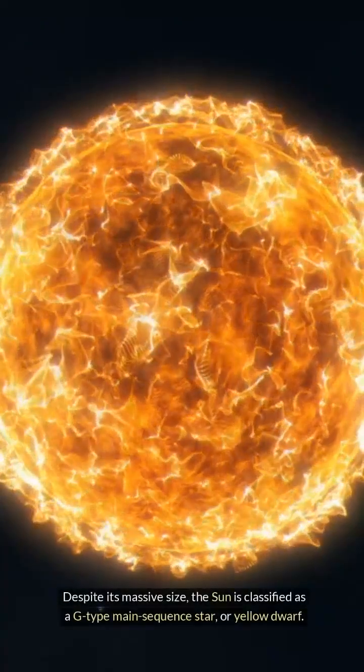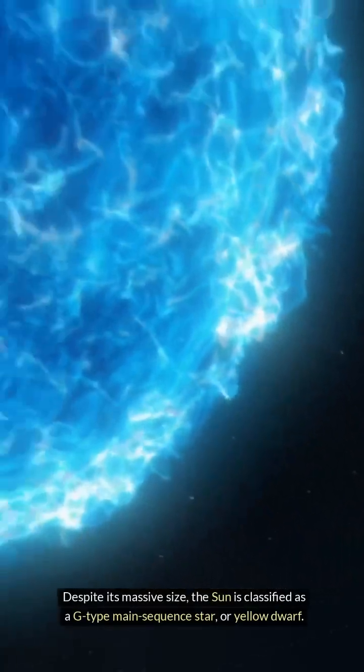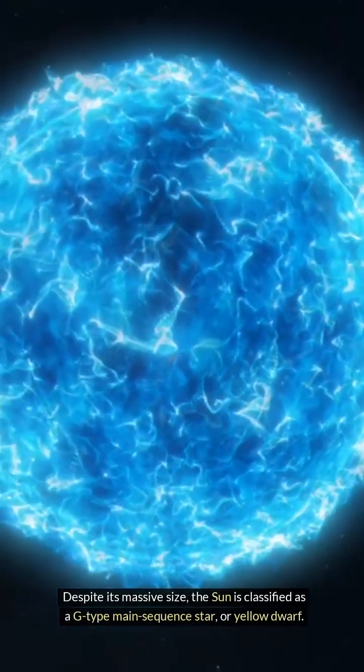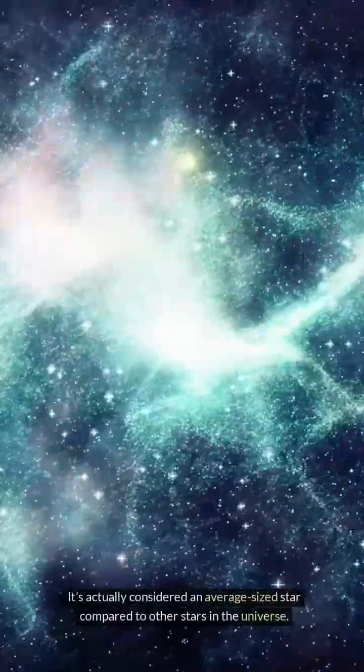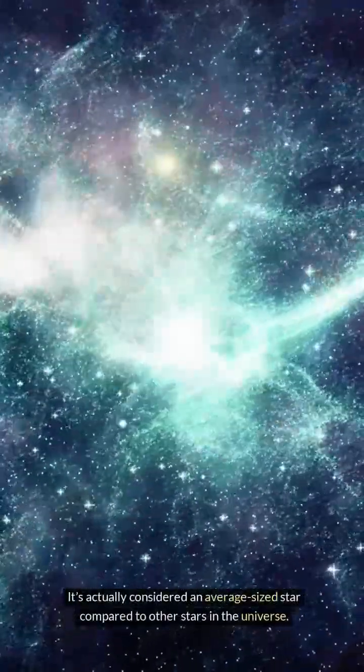Despite its massive size, the Sun is classified as a G-type main sequence star, or yellow dwarf. It's actually considered an average-sized star compared to other stars in the universe.